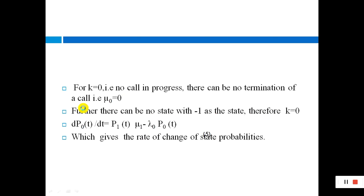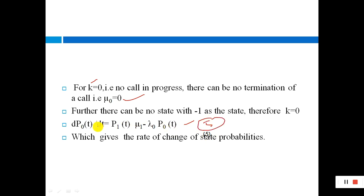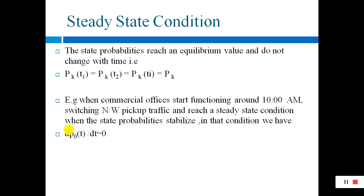For K equal to zero — that is, no call in progress — there can be no termination, so mu_0 equals zero. Also, there can be no state with index minus one. Therefore, setting dp_0/dt and substituting into the previous equation, we get Equation 5, which gives the rate of change of state probabilities.